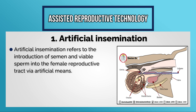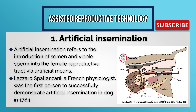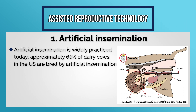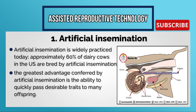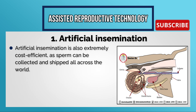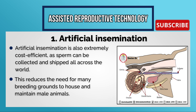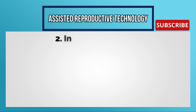Artificial insemination refers to the introduction of semen and viable sperm into the female reproductive tract via artificial means. Lazaro Spallanzani, a French physiologist, was the first person to successfully demonstrate artificial insemination in a dog in 1784. Today approximately 60 percent of dairy cows in the U.S. are bred by artificial insemination. The greatest advantage is the ability to quickly pass desirable traits to many offspring, and it is extremely cost-efficient as sperm can be collected and shipped worldwide, reducing the need for many breeding grounds to maintain male animals.